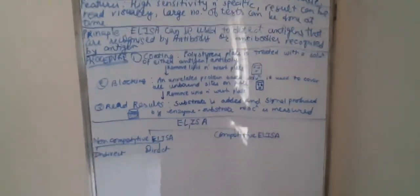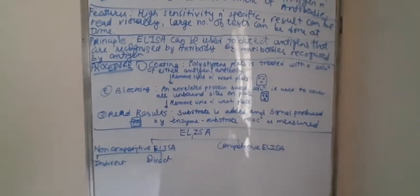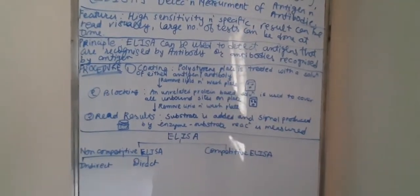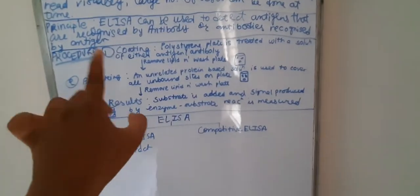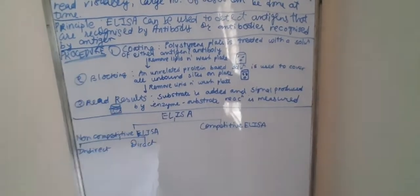The procedure of ELISA consists of three steps: coating, blocking, and read results.